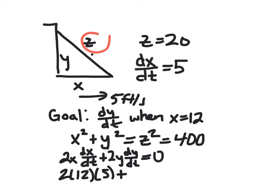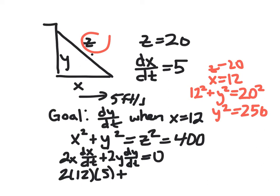So when x is 12 and z is 20, we have 12 squared plus y squared is 20 squared. That's 144 on the left. That's 400 on the right. So y squared is 256. And this means y is 16. You could also see this from knowing 3, 4, 5 triangles. This is just multiplying each side by 4.